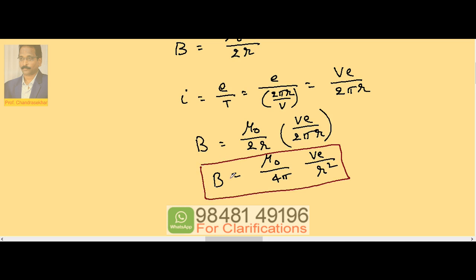So the magnetic induction due to a revolving electron is given by B = (μ₀ / 4π) × (4πve / r²). Now we substitute the values.